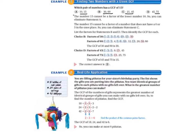So this really tests our knowledge of basic facts and knowing what a factor is. So let's think about the first statement that the book makes here. The number 15 cannot be a factor of the lesser number 10, so you can eliminate statement A. So remember that a factor multiplies by another number to get a product or a multiple. So you can't multiply 15 by another number and get 10, at least not another whole number.